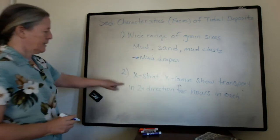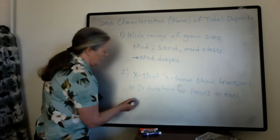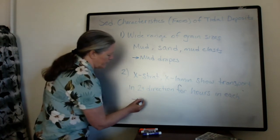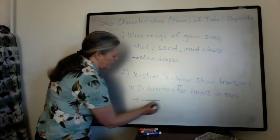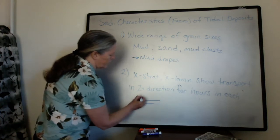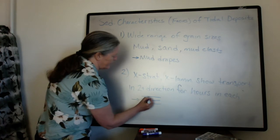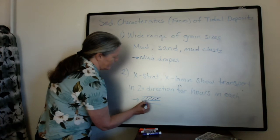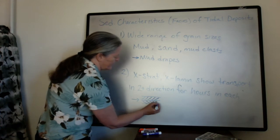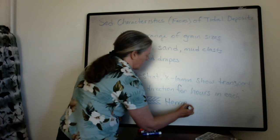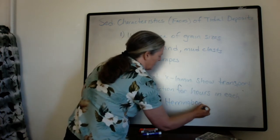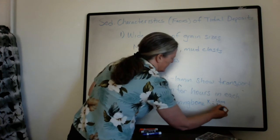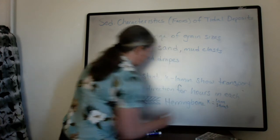And this flow produces two distinctive characteristics, one of which is the herringbone cross stratification, which I will draw an ideal version of it, where you see transport in one direction in one layer, and transport in the other direction in the other. So that's cross lamination if it's ripple or stratification if it's dunes, right?